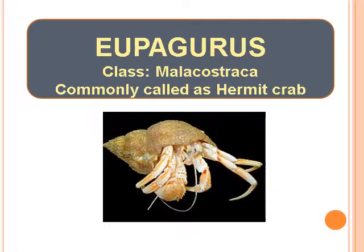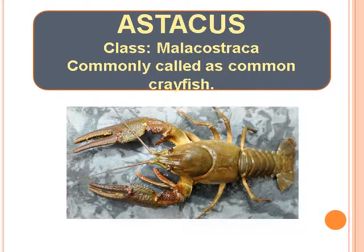Pagurus — Class Malacostraca, commonly called as Hermit Crab. Astacus — Class Malacostraca, commonly called as Common Crayfish.